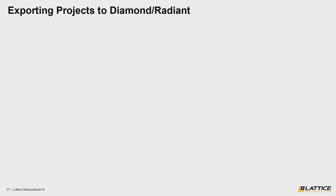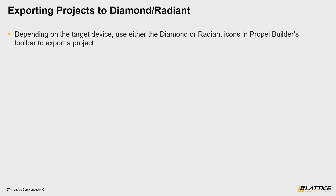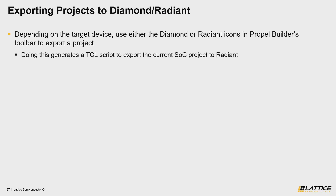The first thing that you should know about Propel projects is that depending on your project's target device, you will need to use either the Diamond or Radiant icons from Propel's toolbar in order to export your project to either tool. By clicking on either icon, a new TCL script will be generated that exports your current SoC project to either Diamond or Radiant.